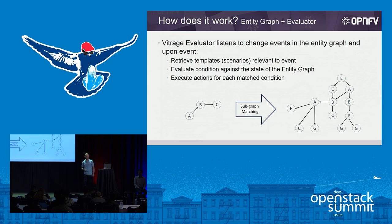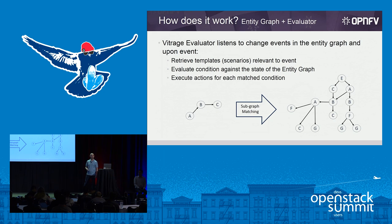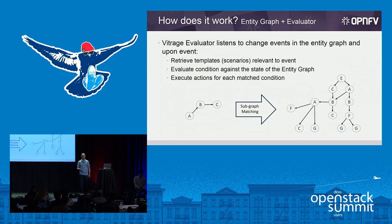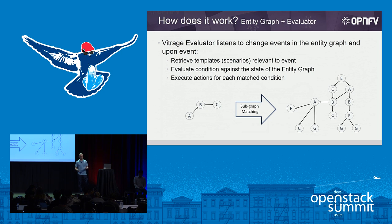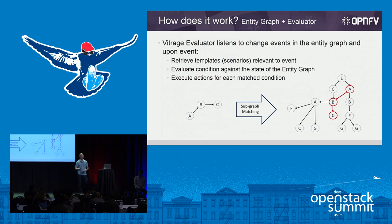How does it work? We have another component in Vitrage called the Vitrage Evaluator. The evaluator listens to changes in the entity graph and, upon an event, retrieves the relevant template. We can have many templates, so the evaluator finds the relevant template for the event, evaluates the conditions in those templates, and executes the action. We use subgraph matching to do that — every scenario in the template is like a small graph, and you have to find where that subgraph sits within the big graph.